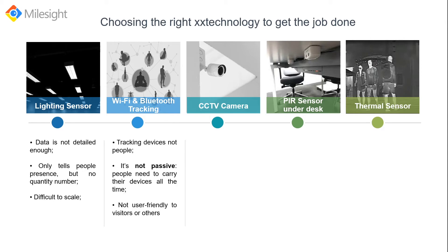Wi-Fi and Bluetooth work in a very similar way through radio signals — you are checking devices, not people. This means the data is not as rich or accurate as you might think. A common example: if someone leaves their mobile phone at their desk and goes to a meeting, you can't capture how many people are really using a specific area. People need to carry a device actively looking for Wi-Fi or have Bluetooth switched on with a certain app installed, so it's not user-friendly for visitors or customers.